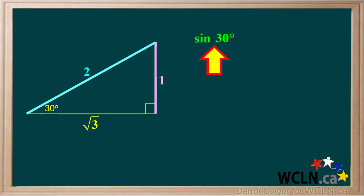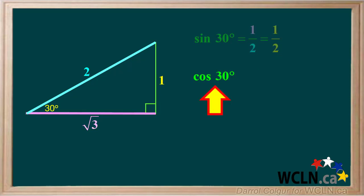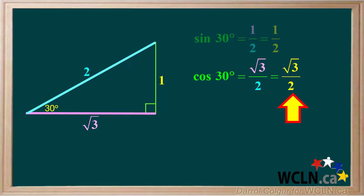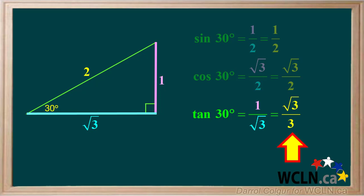The sine of 30 degrees is the opposite side over the hypotenuse, which is 1 over 2, or exactly 1 half. The cosine of 30 degrees is the adjacent side over the hypotenuse, which is the square root of 3 over 2. So the exact cosine of 30 degrees is root 3 over 2. The tangent of 30 degrees is the opposite side over the adjacent side, which is 1 over the square root of 3. Rationalizing the denominator gives us root 3 over 3, which is the exact value of the tangent of 30 degrees.